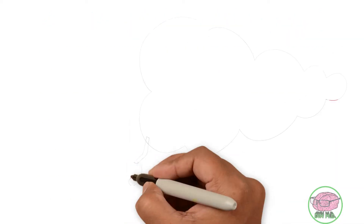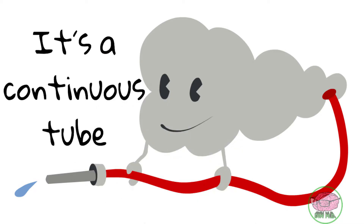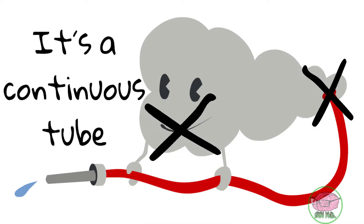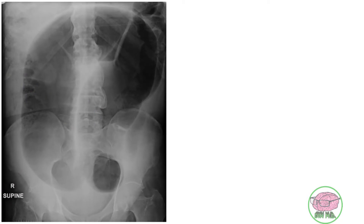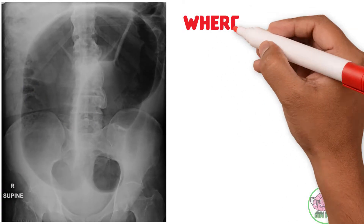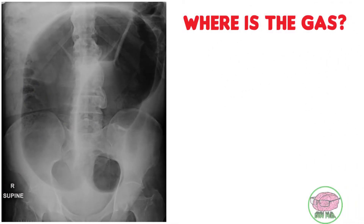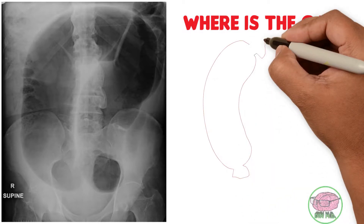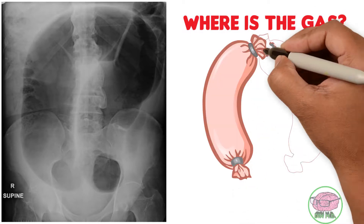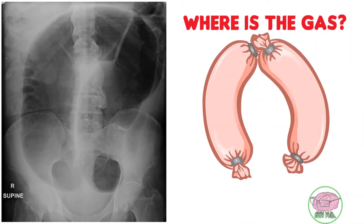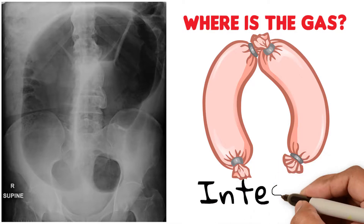The gastrointestinal system is like a continuous tube with an input and an output — either one can be blocked. Looking at this x-ray, the gas forms a shape like two sausages. Which structure inside the abdominal cavity is sausage-shaped? That's easy: the intestines.